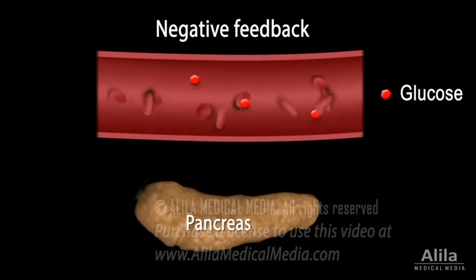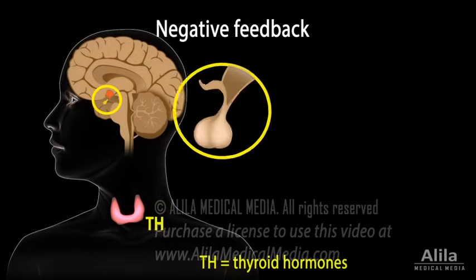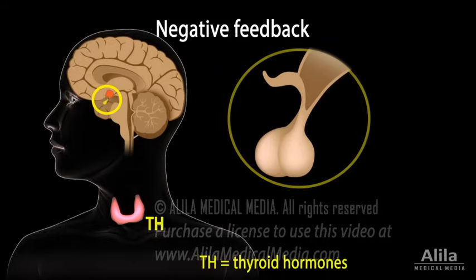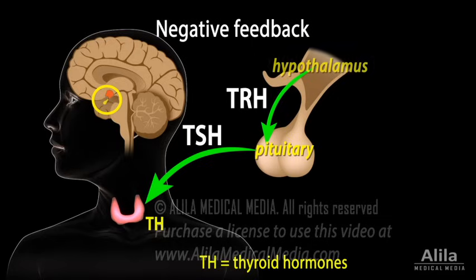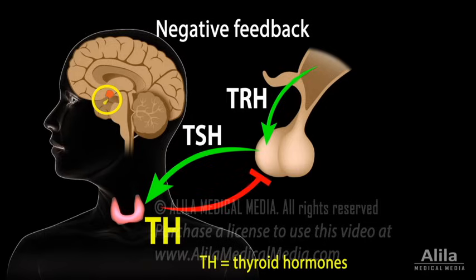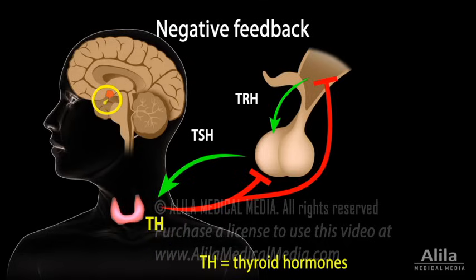Another example is the regulation of thyroid hormone levels, which are induced by a pituitary hormone called thyroid-stimulating hormone, TSH. TSH, in turn, is under control of thyrotropin-releasing hormone, TRH, from the hypothalamus. When thyroid hormone levels are too high, they suppress the secretion of TSH and TRH, consequently inhibiting their own production.